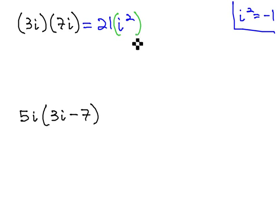But this i squared is the same as negative 1. So we really have 21 times negative 1, which makes it negative 21.